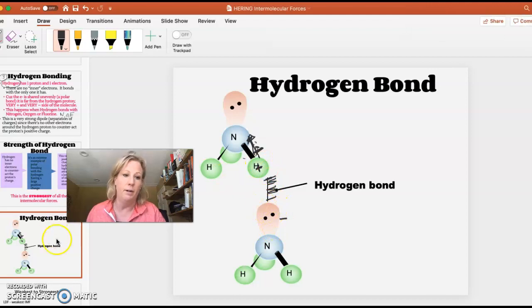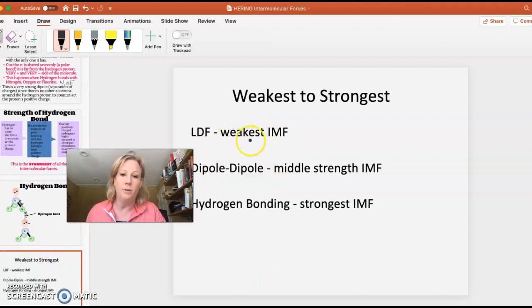In summary, the LDFs are the weakest of the IMFs but the more electrons the stronger these do get. Dipole-dipole is stronger because it's a permanent dipole or difference in charge or polarity. One molecule is going to be permanently negative on one end, positive on the other. And then hydrogen bonding is just an extreme case of dipole-dipole when you have hydrogen bonded with nitrogen, oxygen, or fluorine. I hope that helps.